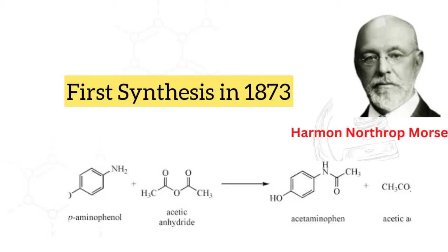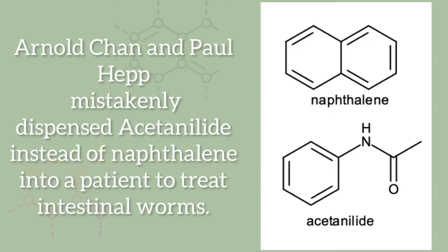Paracetamol was first synthesized by Harman Northrop Morse by the reduction of nitrophenol with tin in glacial acetic acid in 1873. However, paracetamol was not used medically then. In the 1880s of the 19th century, Arnold Cahn and Paul Hepp, both doctors at the University of Strassburg,